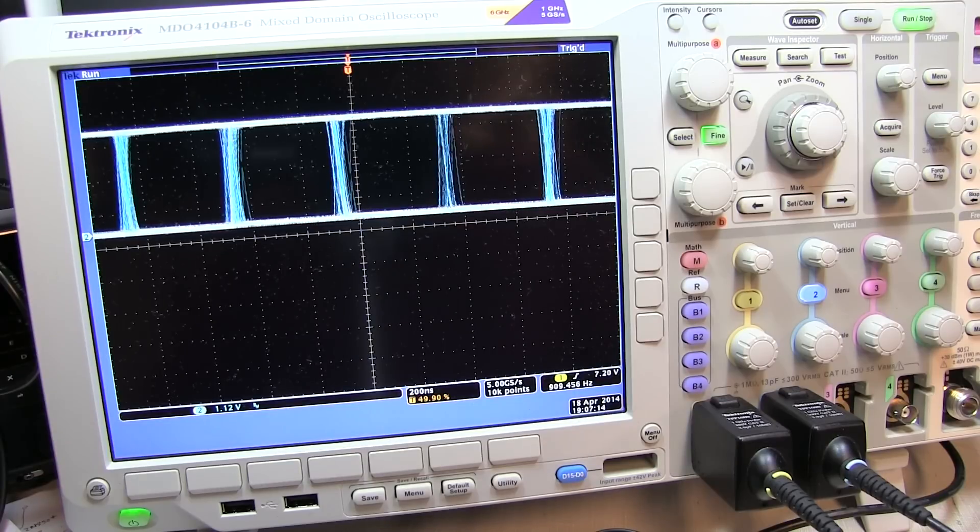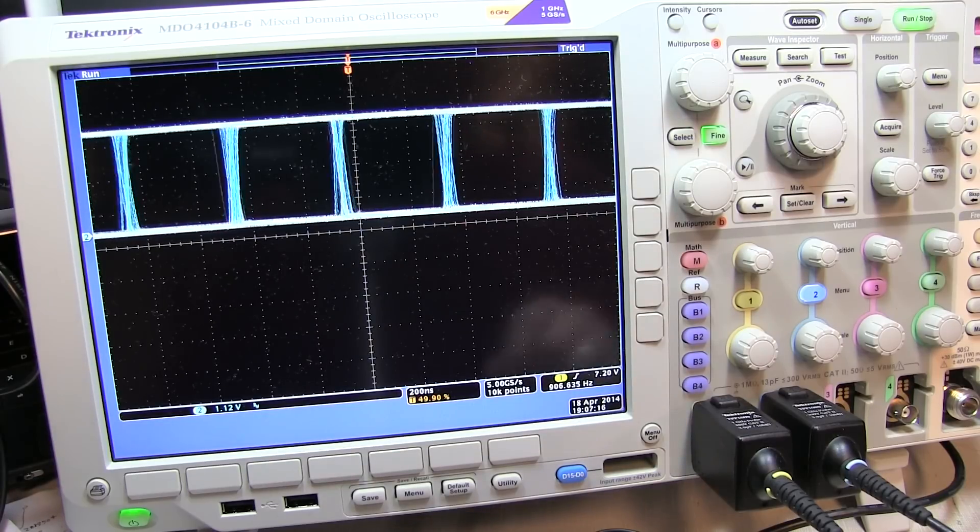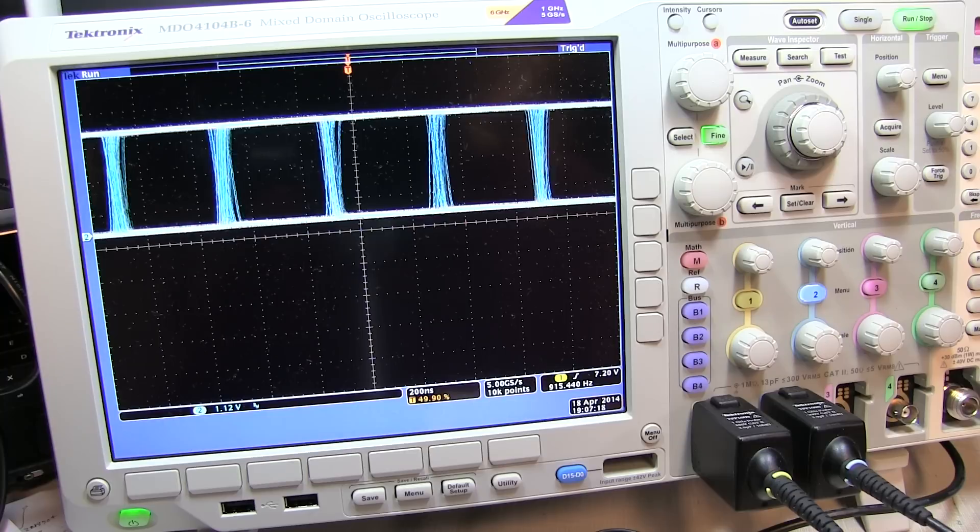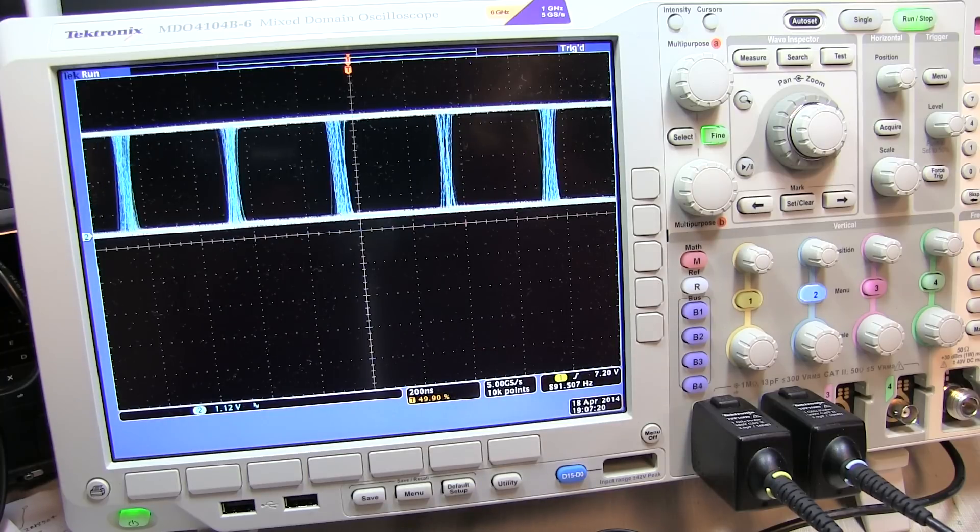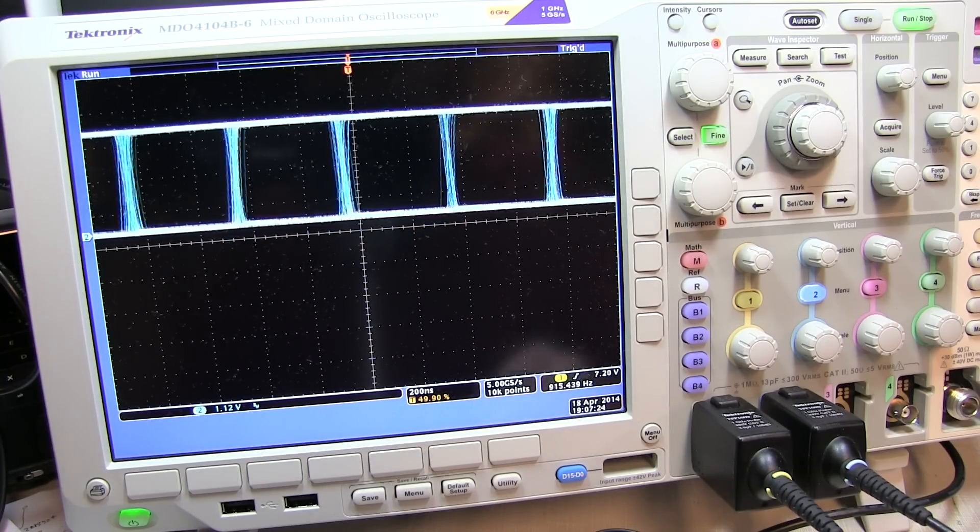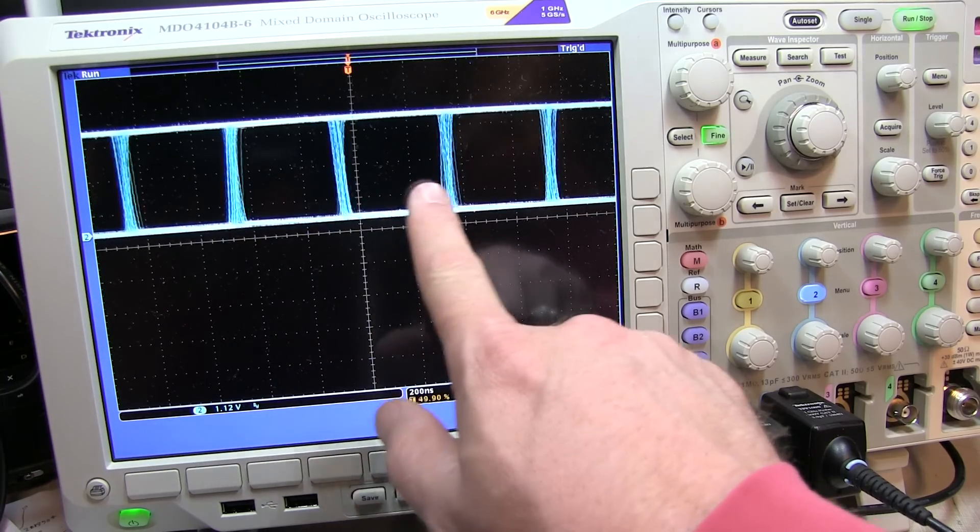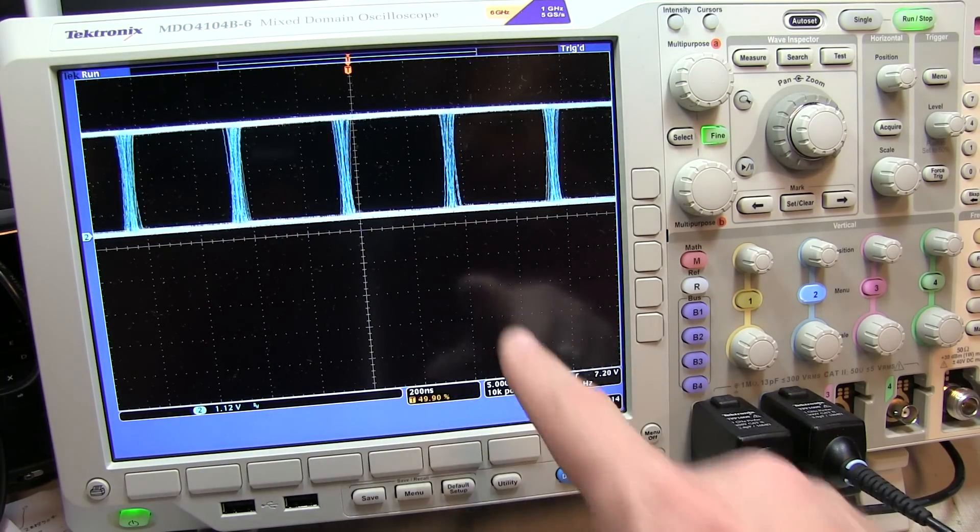So for illustration purposes, I moved my channel 1 probe that I'm using for a trigger source to a different point on the board, to a point that's less stable. And so we can see now that the eye pattern is a little less stable.